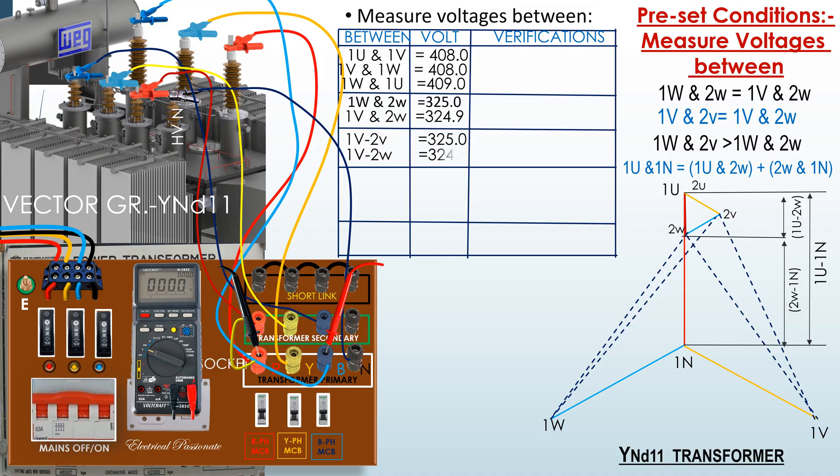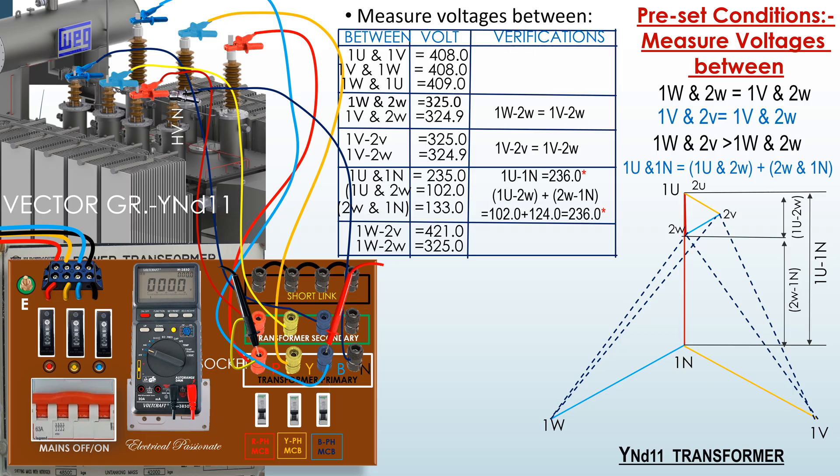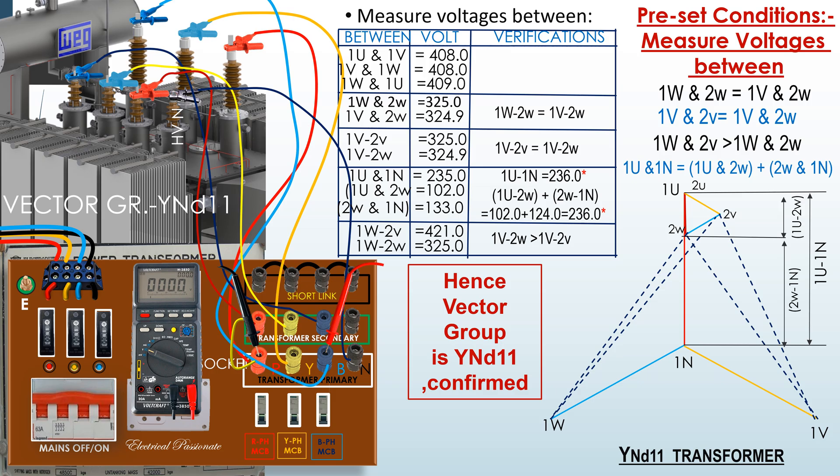We are to verify the measured voltage according to preset conditions. Here we see the results satisfying all conditions of vector group YND11. Hence, vector group is YND11 confirmed.